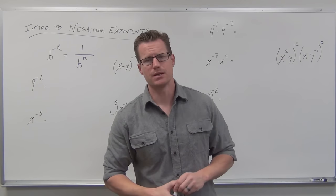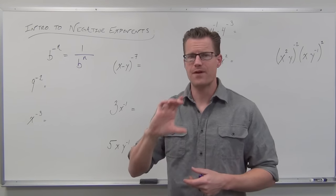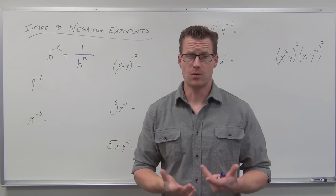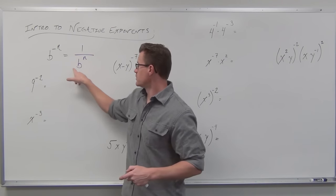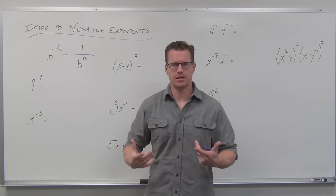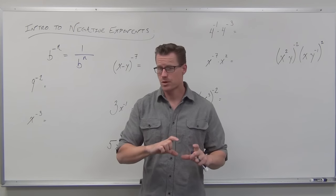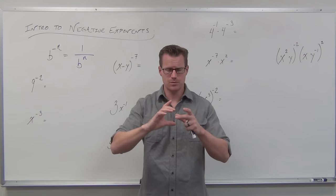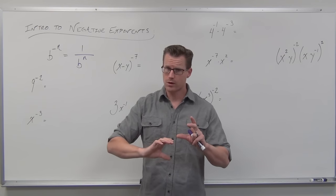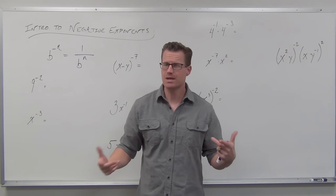Whenever you move a factor that has an exponent associated with it — and everything has an exponent — whenever you move a factor from a numerator to a denominator or a denominator to a numerator, you change the sign of that exponent. The sign of the number doesn't change; b is still b. But when we moved it from a numerator to a denominator, the sign of the exponent changed. Negatives become positives, positives become negatives. Note: we can move factors — not terms. Terms are pieces added or subtracted; we cannot move those.